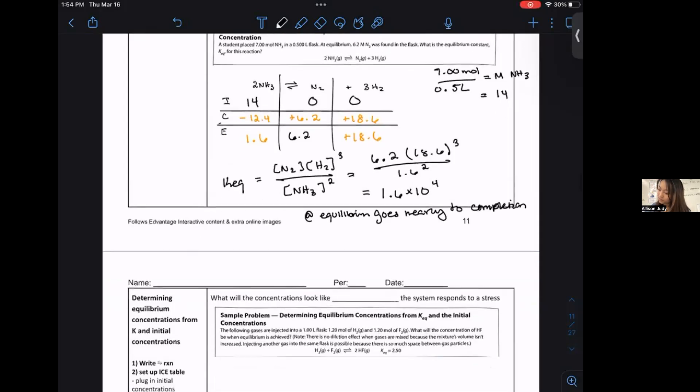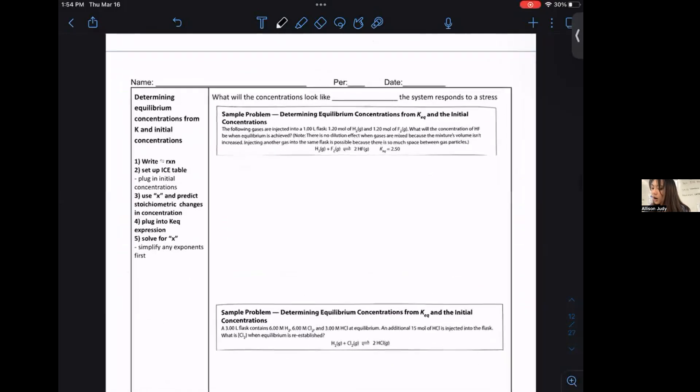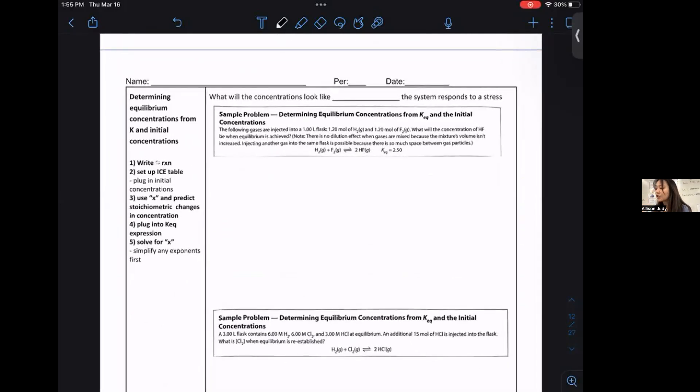Awesome. So where did Daniel go? Oh, he was not supposed to go. Try the next one. We don't have the next one. Here's the second type of problem. This is when we determine equilibrium concentrations from K and initial concentrations given. So what we're asking is, what will the concentrations look like after the system responds to stress?